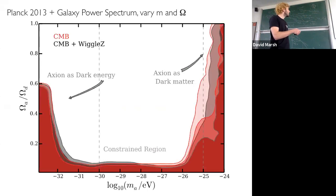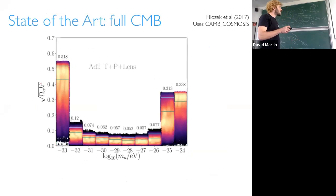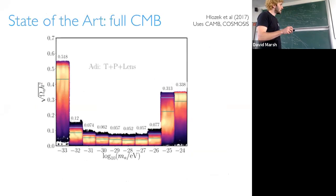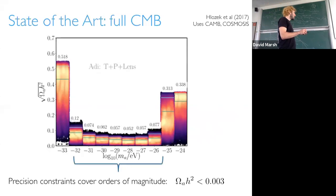Moving on, we did this for the full CMB from the Planck 2016 release using temperature, polarization, and lensing in the adiabatic mode. Using the bin technique, I've now shaded within the bin according to the point density. You see the 10^{-25} bin does not go as high in point density as 10^{-24}. We get precision constraints on axion density between 10^{-32} and 10^{-25} eV — the dark matter cannot contain very much of these things. It's like a hot dark matter constraint.